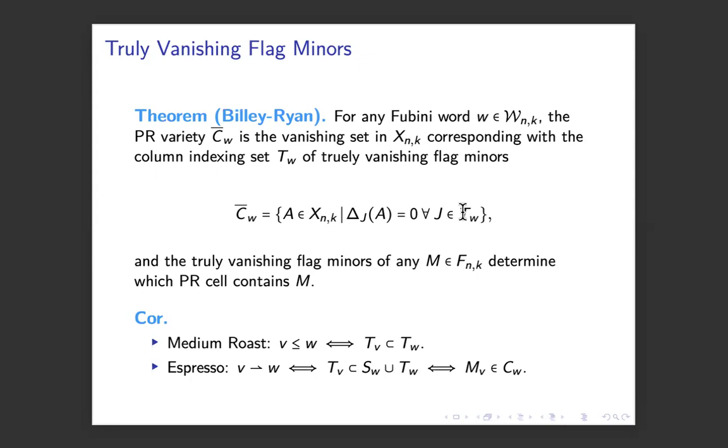And they do define these PR varieties. And so the medium roast order could be defined as V is less than W if and only if the truly vanishings for V are contained in the truly vanishings for W.